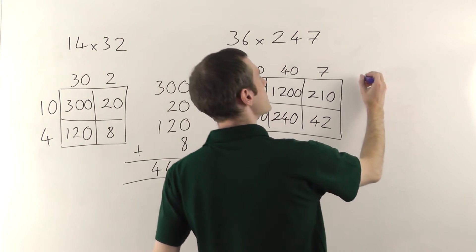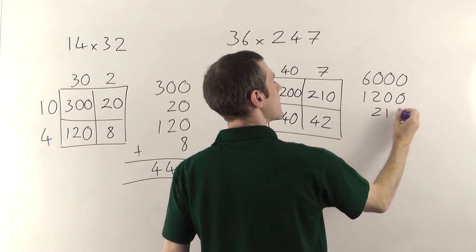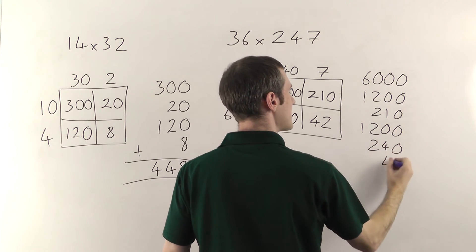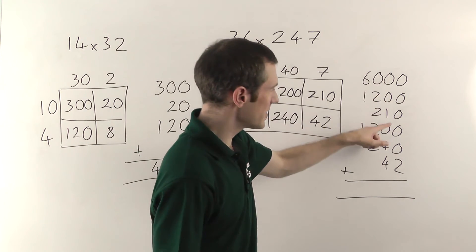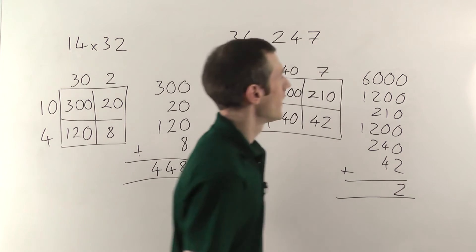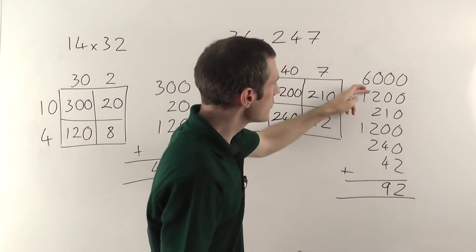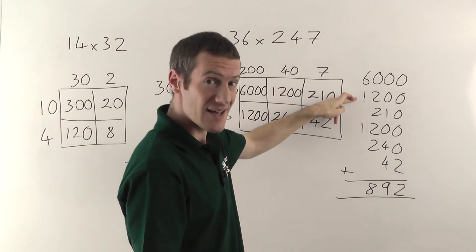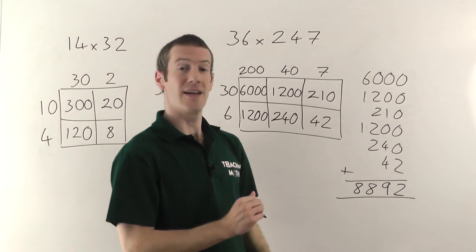Then you add up all the numbers. We do have quite a lot of numbers to add up here, but as I said, you always end up with a lot of zeros, so although you've got quite a lot to add, it's actually very easy to do. 0 plus 0 plus 0 plus 0 plus 0 plus 0 plus 2 is 2. 1 plus 4 is 5, plus another 4 gives you 9. 2 plus 2 plus 2 plus 2 plus 2 is 8, actually that's... and 6 plus 1 is 7, plus another one gives you 8. So the final answer is 8,892.